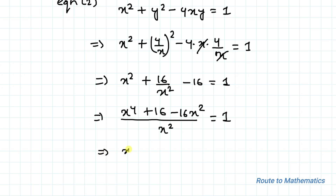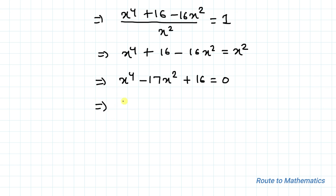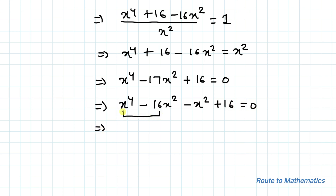By cross multiplication, x⁴ + 16 - 16x² = x². Taking x² to the left-hand side gives x⁴ - 17x² + 16 = 0. We can split -17x² as -16x² - x², so we have x⁴ - 16x² - x² + 16 = 0.